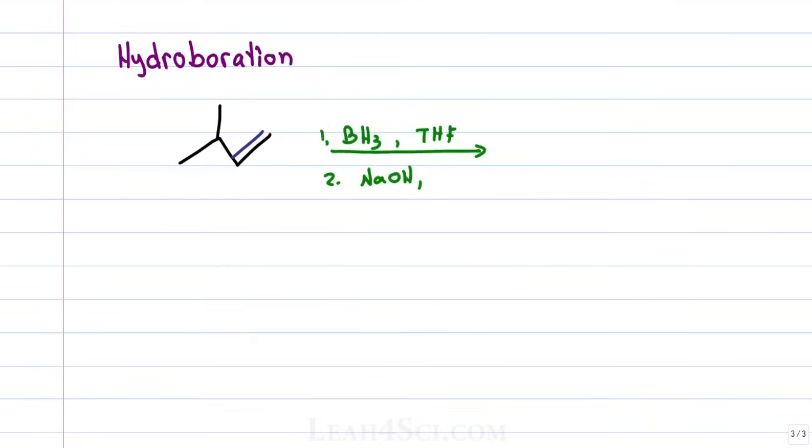For this reaction we're using BH3 and THF in the first step, NaOH, H2O2, sometimes you'll also see H2O in the second step. This is an anti-Markovnikov reaction meaning the hydrogen adds to the more substituted carbon but the alcohol adds to the less substituted carbon.